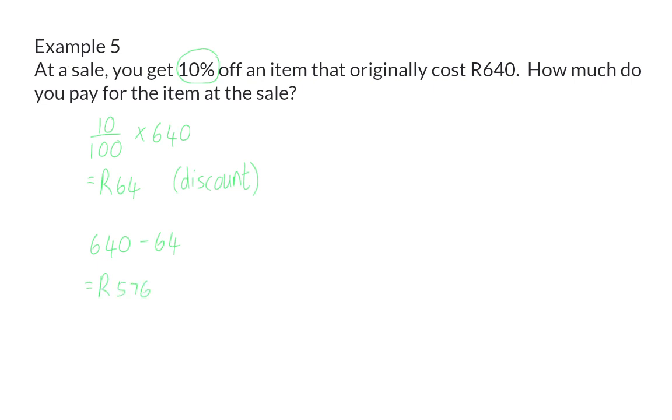Another option is that you could have realized that because you get 10% discount, you will only pay 90% of the original cost, which means that you could immediately determine 90% or 90 out of 100 of that original amount, and this will immediately give you what you need to pay, which is 576 Rand.